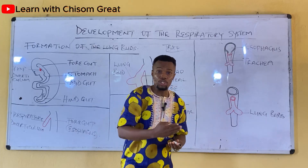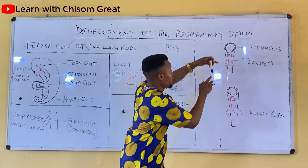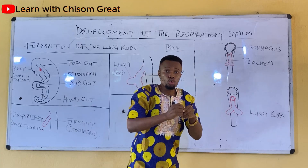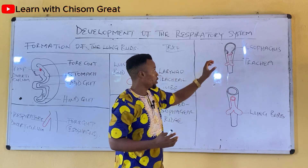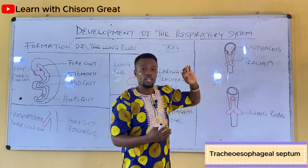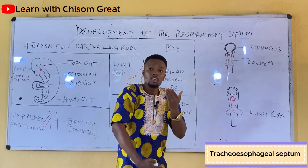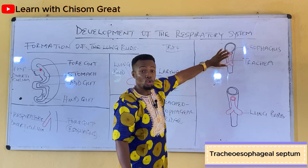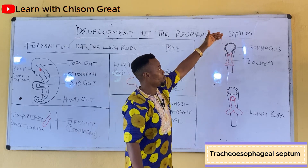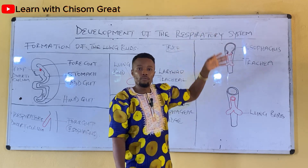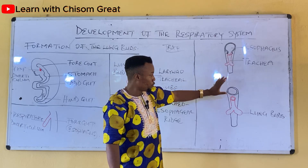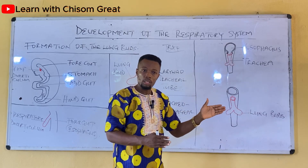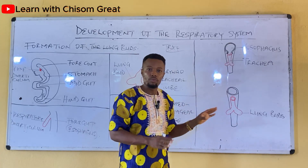The tracheoesophageal ridge — there is a ridge on each side — and these two ridges come together and fuse to form the tracheoesophageal septum. The tracheoesophageal septum is what actually separates the respiratory diverticulum, or the already-developed lung bud, from the esophagus or from this part of the foregut. After separation, each structure can develop on its own.